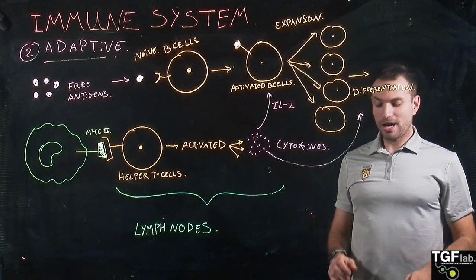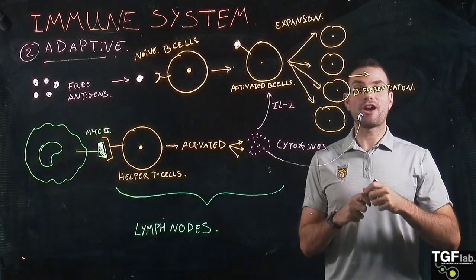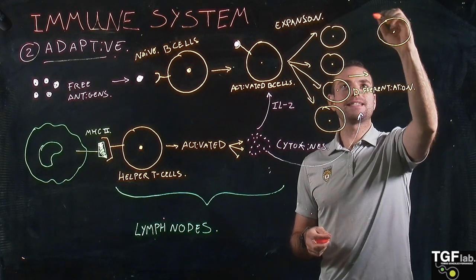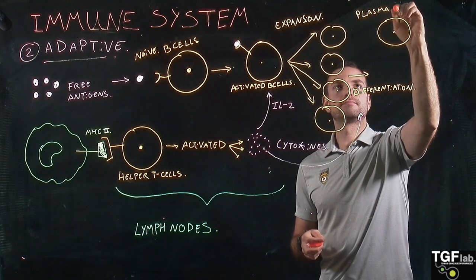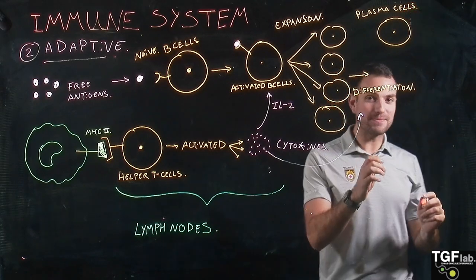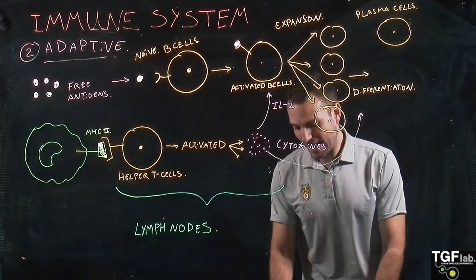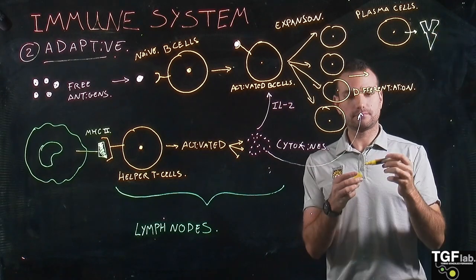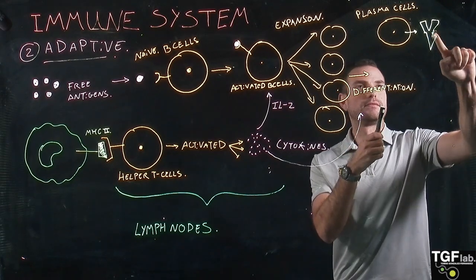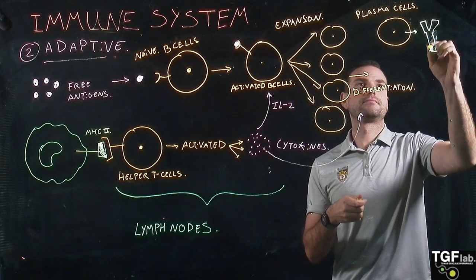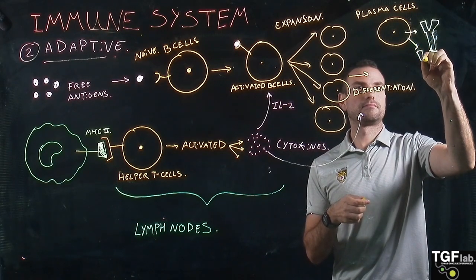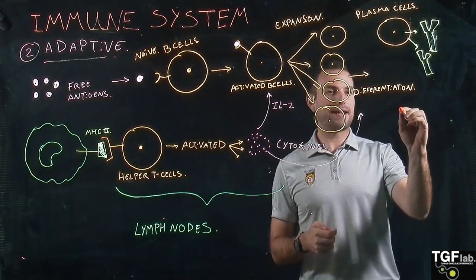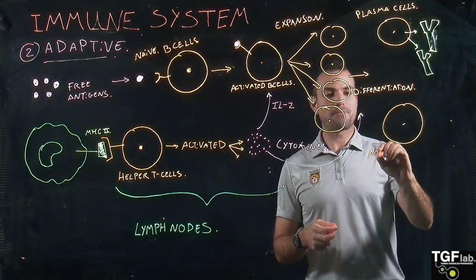Through this process of differentiation, the B cells are going to differentiate into two different types of cells. They are going to differentiate into plasma cells — the plasma cells are really important because they are going to be the cells that secrete the antibodies — and also into memory B cells.